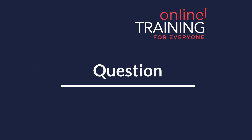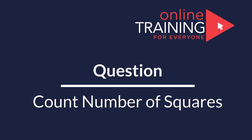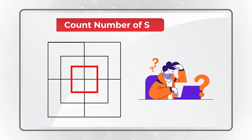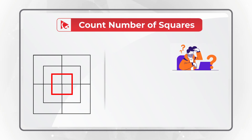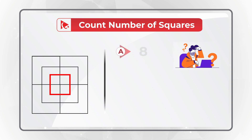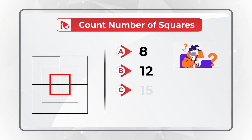Here's one of my favorite questions where you need to count the number of squares presented in the shape. You have four different choices: Choice A, 8; Choice B, 12; Choice C, 15 squares; and Choice D, 18 squares.